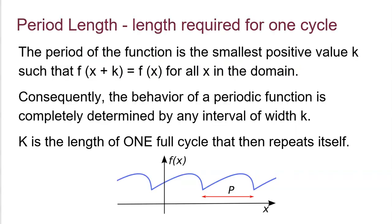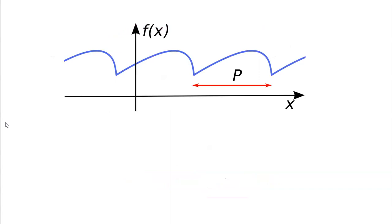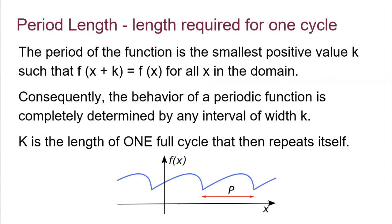The period length is the length required for one cycle. The length of the period goes from any beginning point to any ending point. Mathematically, we say the period of the function is the smallest positive value k, such that f(x + k) = f(x) for all x in the domain.